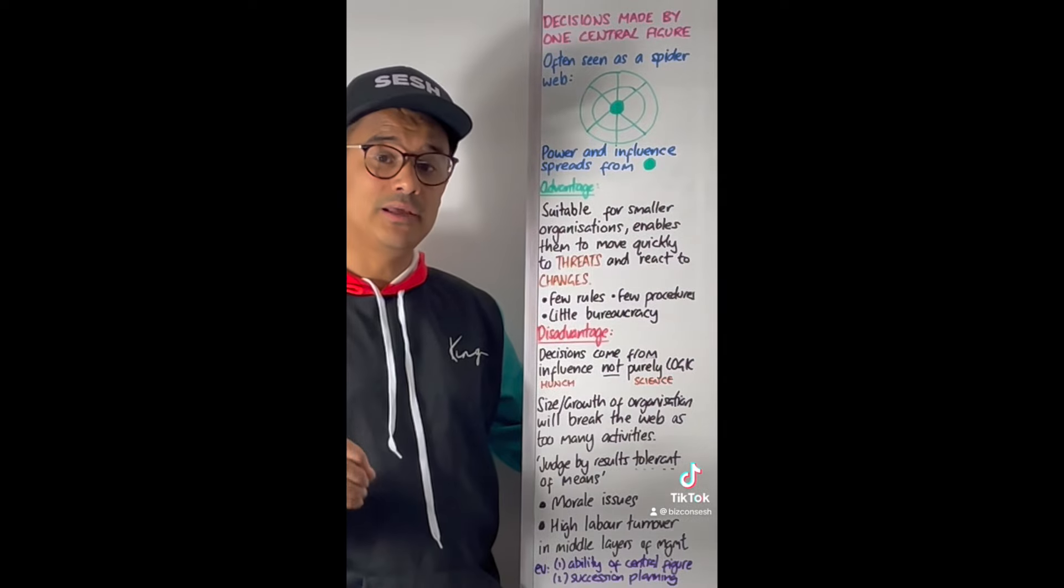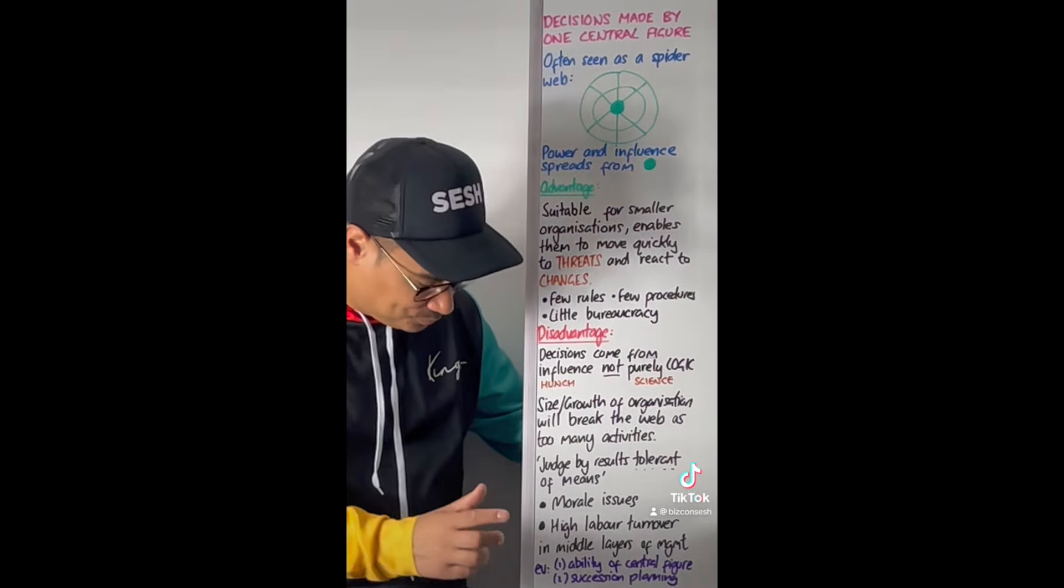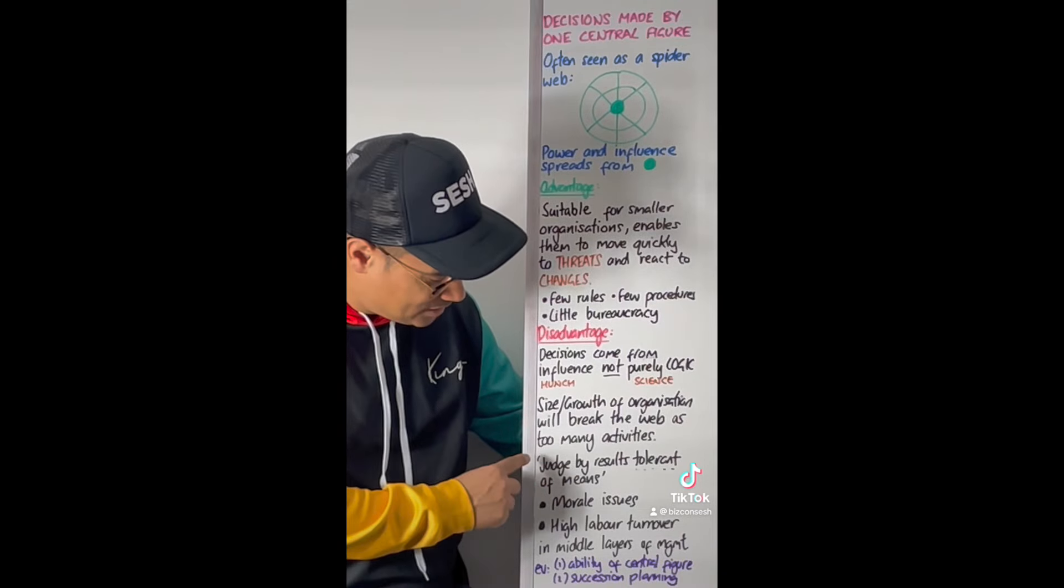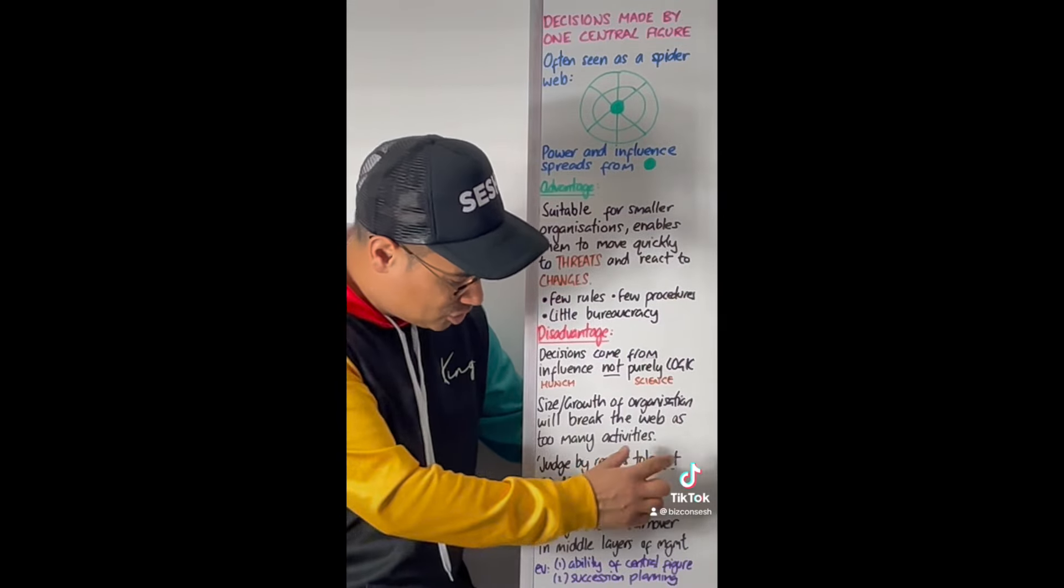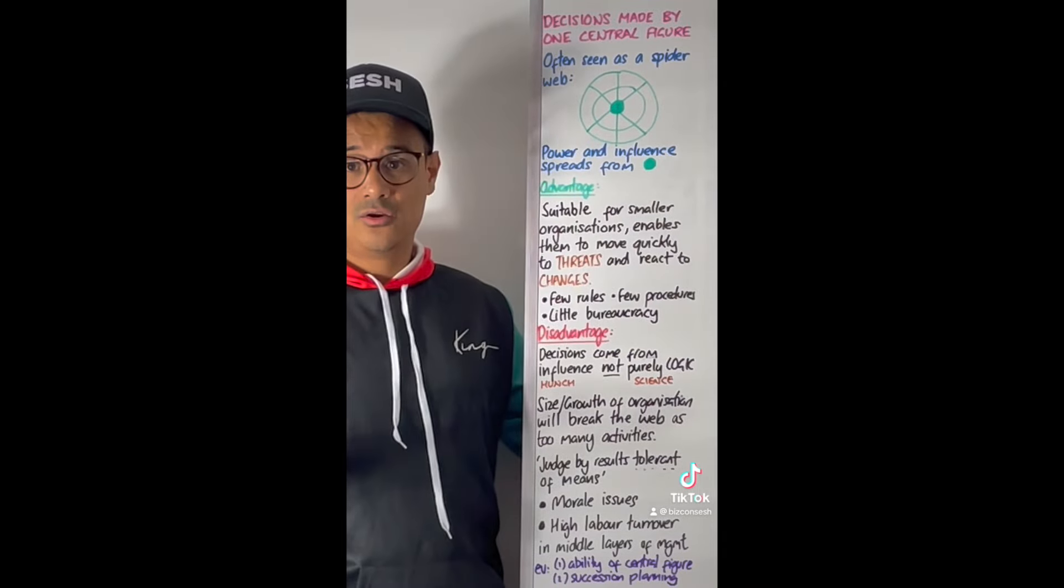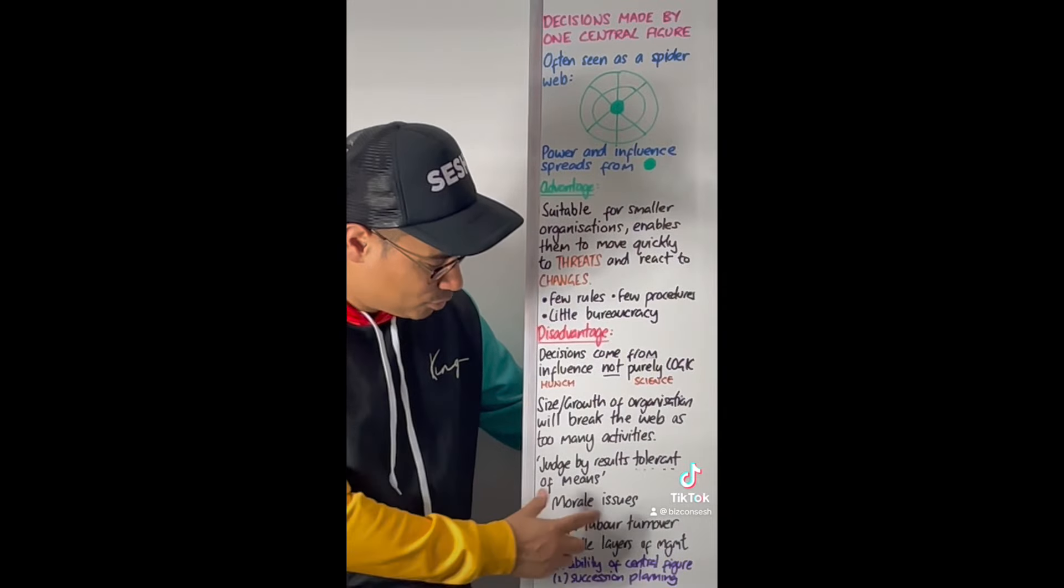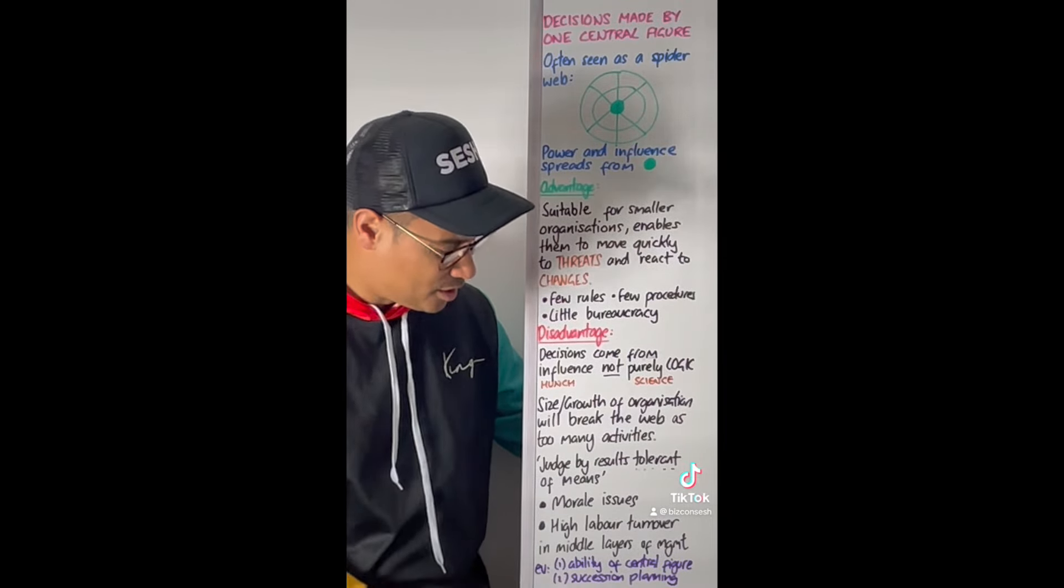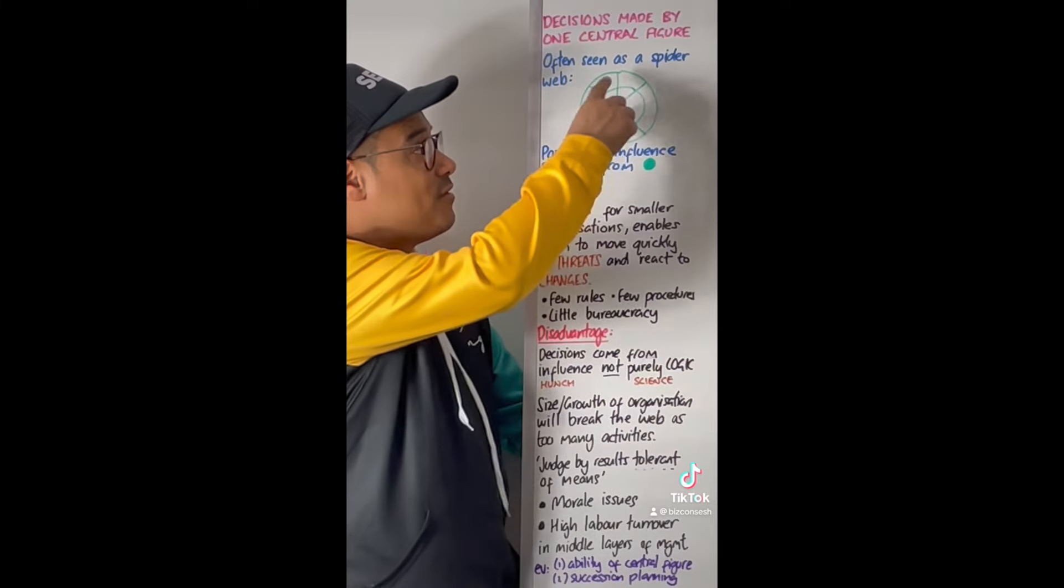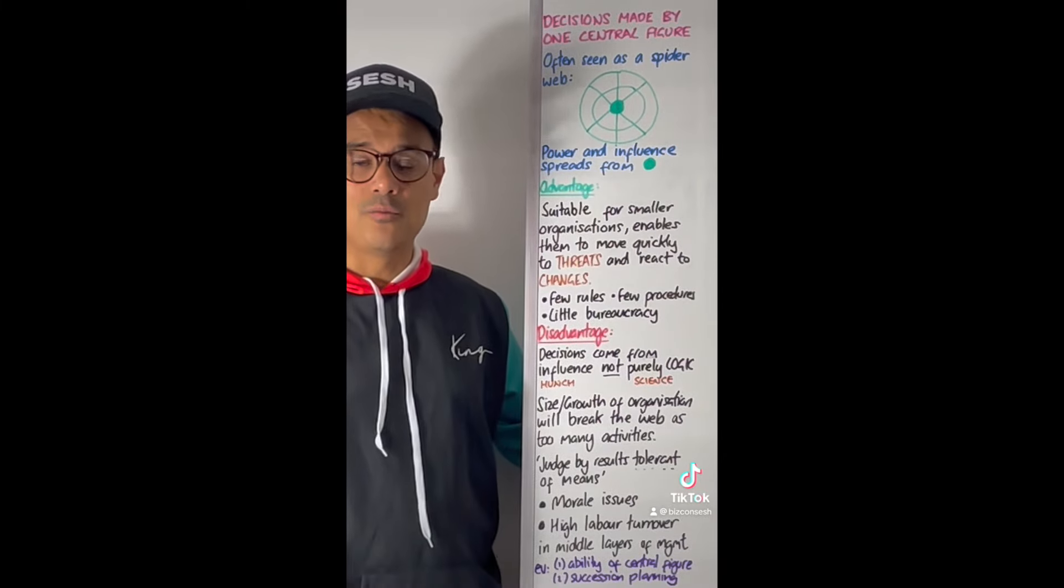There's also HR implications with power cultures. Handy said this quote: judge by results, tolerant of means. The centralised figure is very much hard HRM, they just want the job done. It might lead to morale issues, high turnover, and particularly high labour turnover in that middle management area of the business.